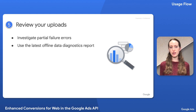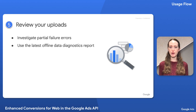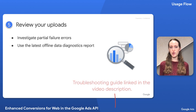Lastly, review your uploads. When you're just setting up your enhanced conversions for web integration, be sure to investigate and address any errors that came up in the partial failure error field. Once you've addressed any errors and completed your integration, it's best to review your uploads by querying for the latest offline data diagnostics report. If anything looks amiss, our troubleshooting guide can help you sort through issues. That's it for the enhanced conversions for web usage flow. I hope you found this video helpful. Thanks for watching.